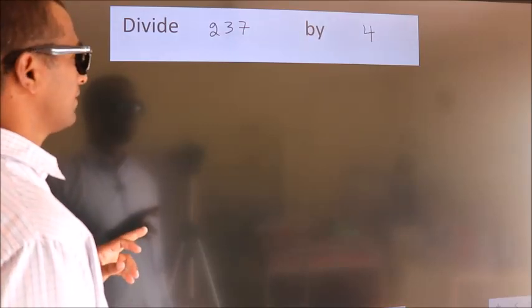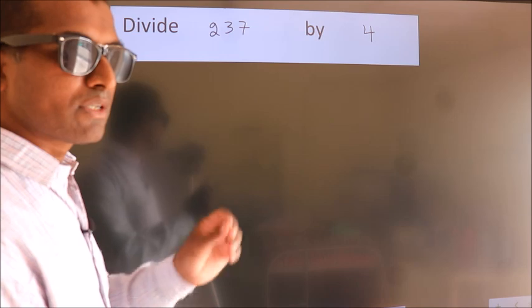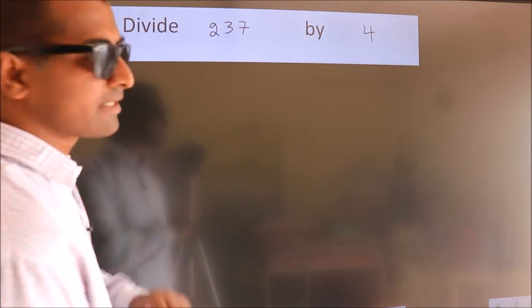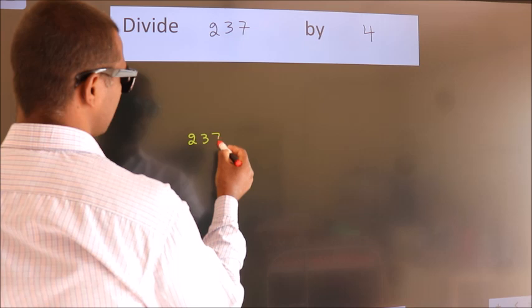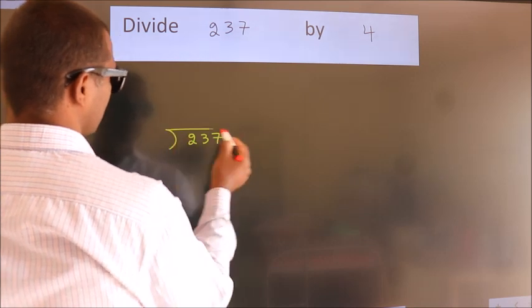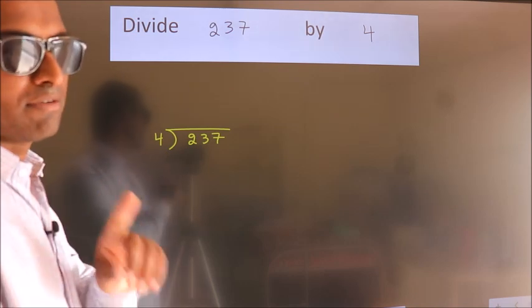Divide 237 by 4. To do this division we should frame it in this way. 237 here, 4 here. This is your step 1.